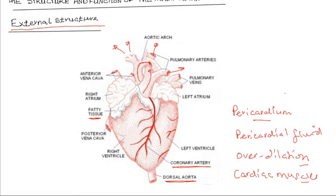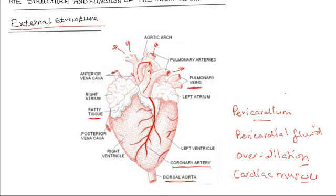Most of the blood flows through the dorsal aorta to the rest of the body. There are also pulmonary veins, which bring oxygenated blood from the lungs back to the heart — the pulmonary arteries take blood to the lungs for oxygenation, and the pulmonary veins return it.